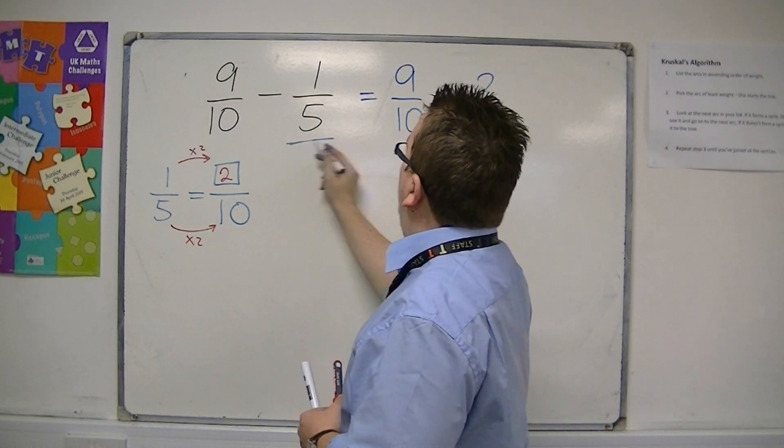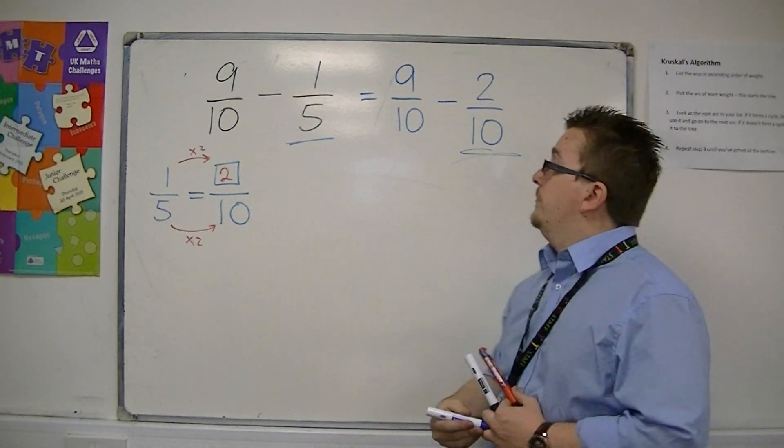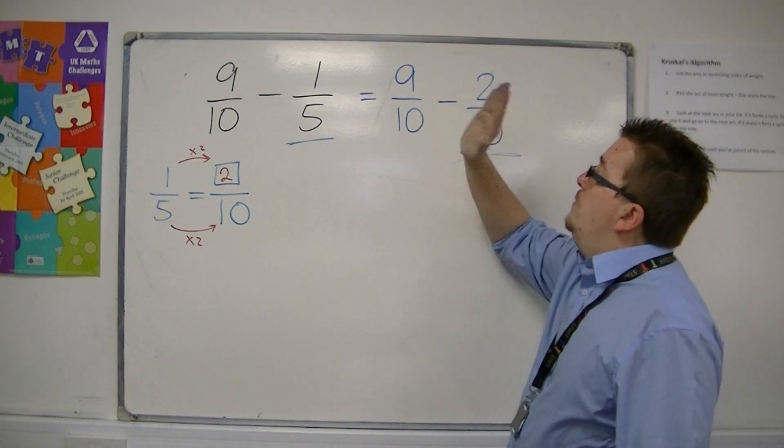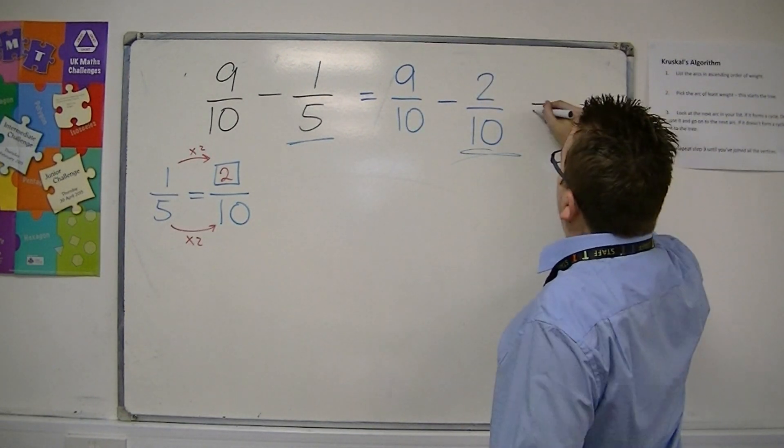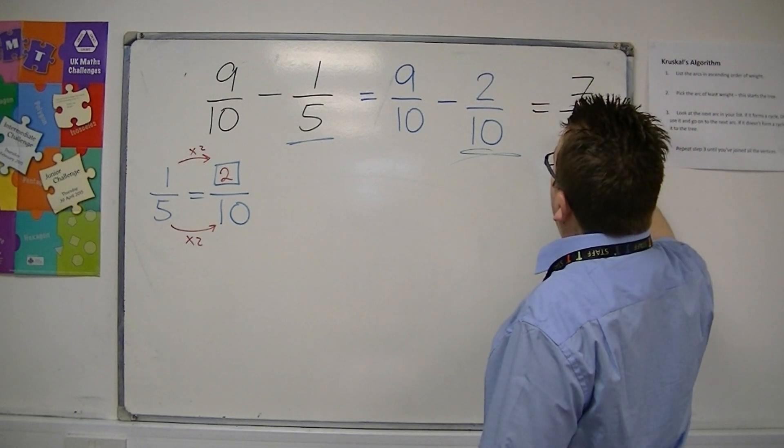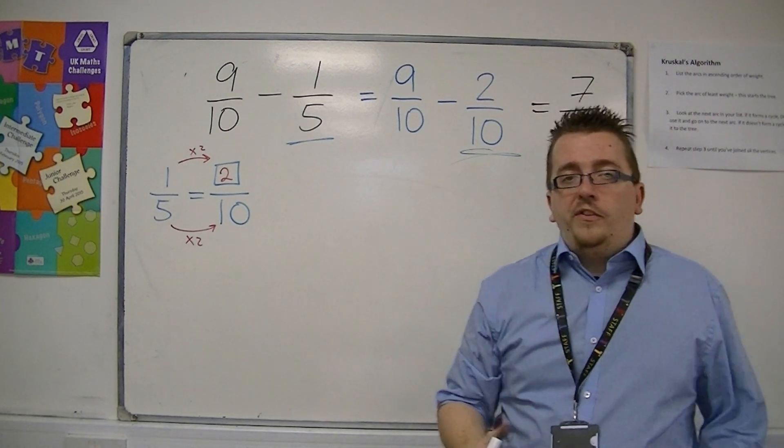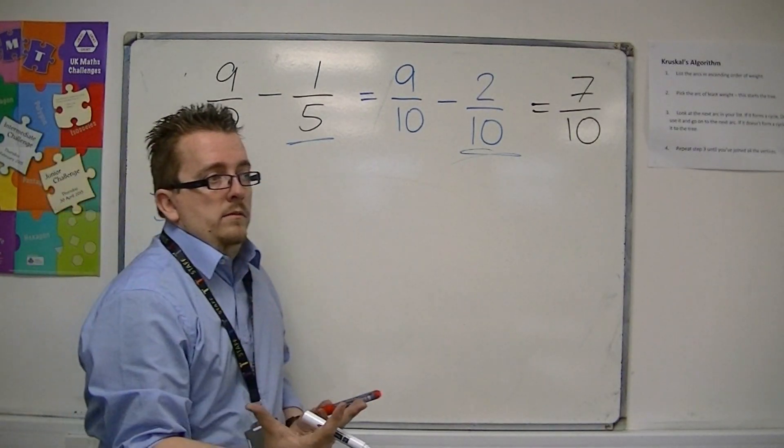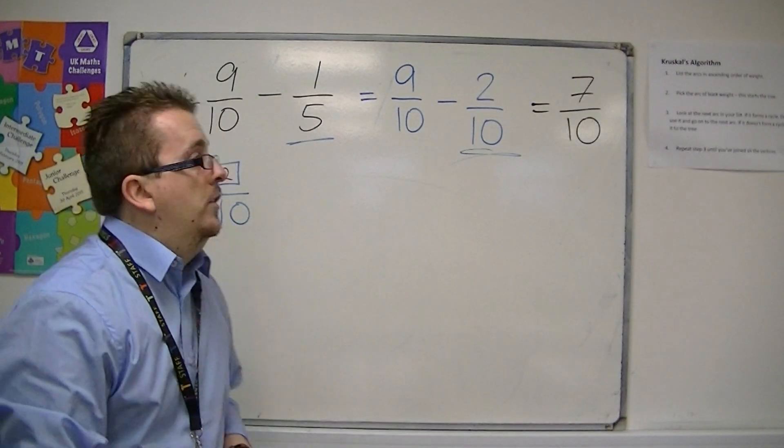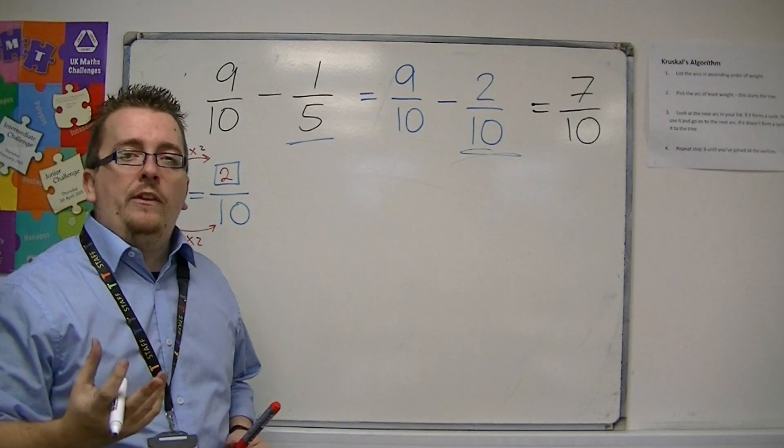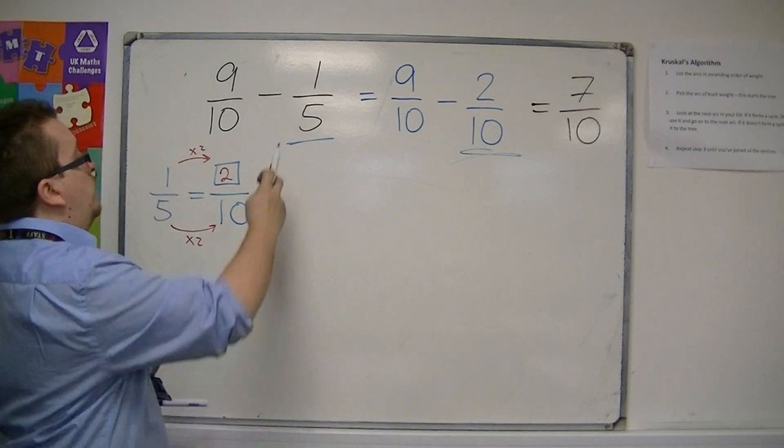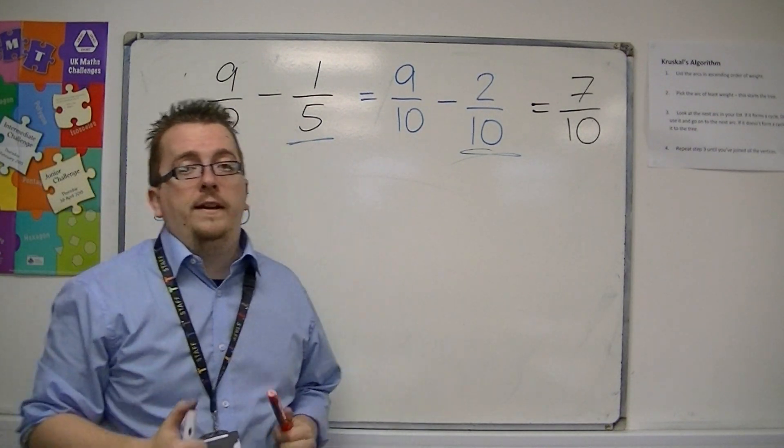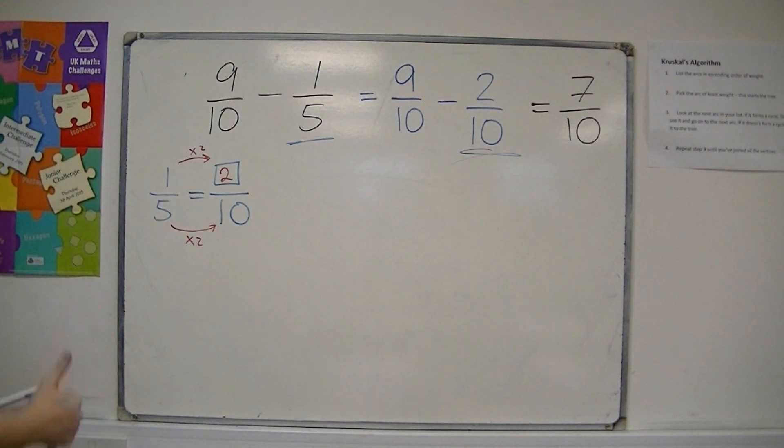So the 1 fifth I've replaced with the 2 tenths. So now that the denominators are the same, I can just go 9 take away 2 is 7. So the answer is 7 tenths. So if you are able to write one of the fractions as an equivalent fraction to make the denominators the same, then perfect, and that will work for you.